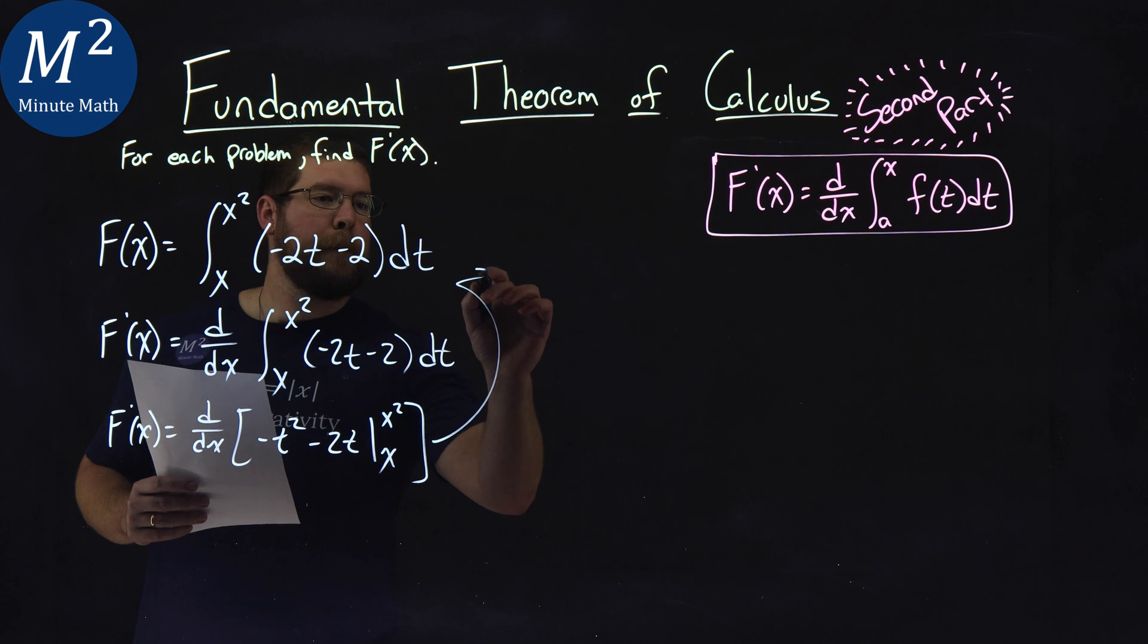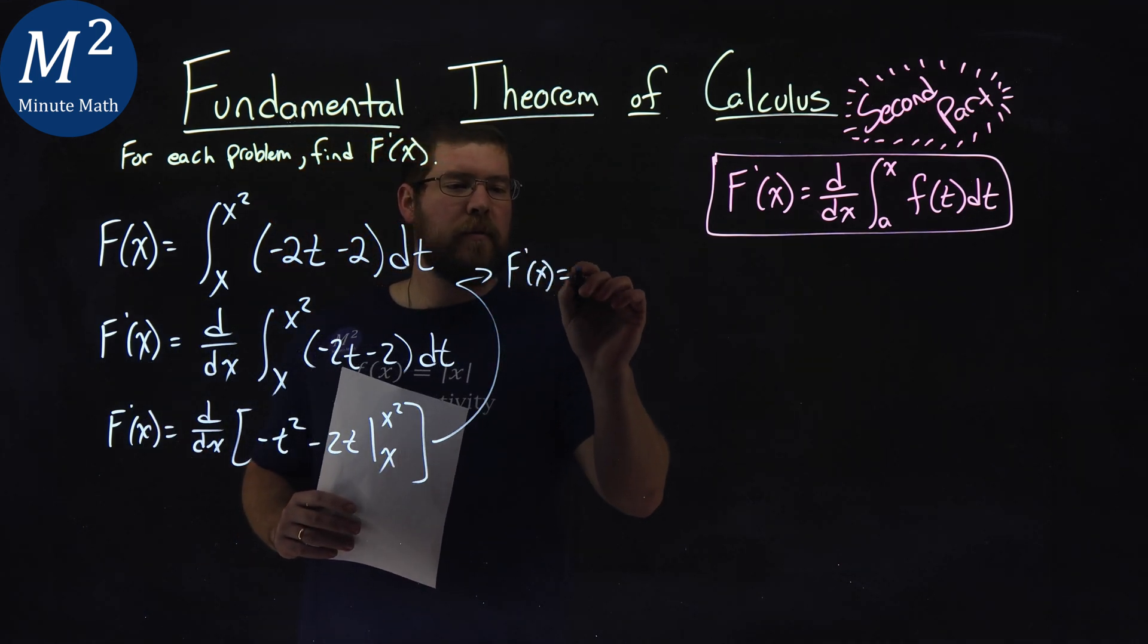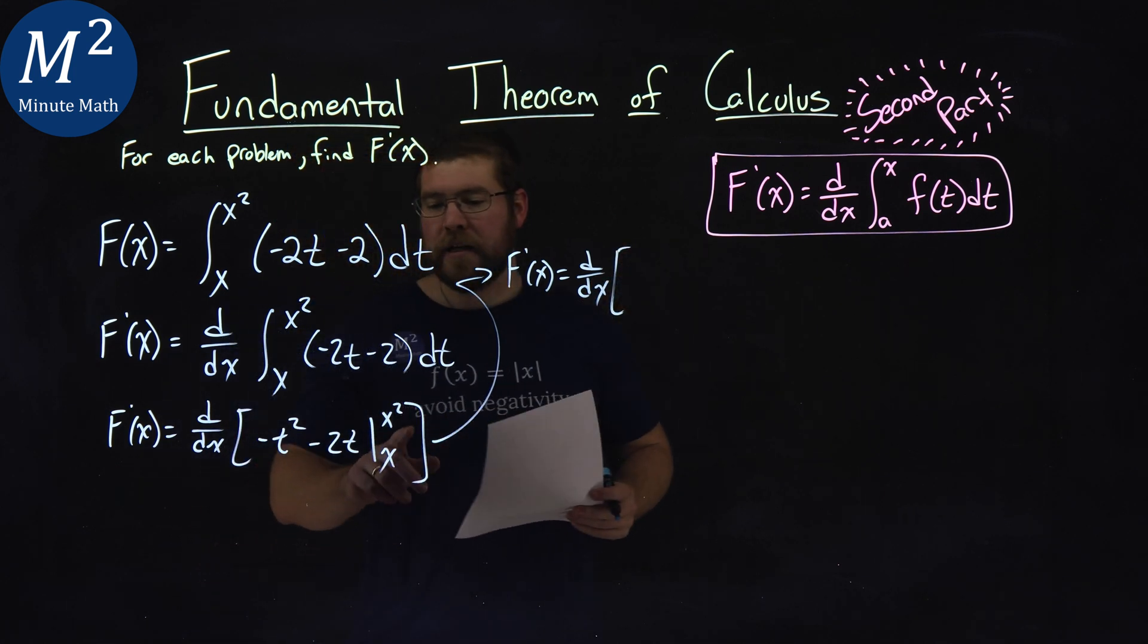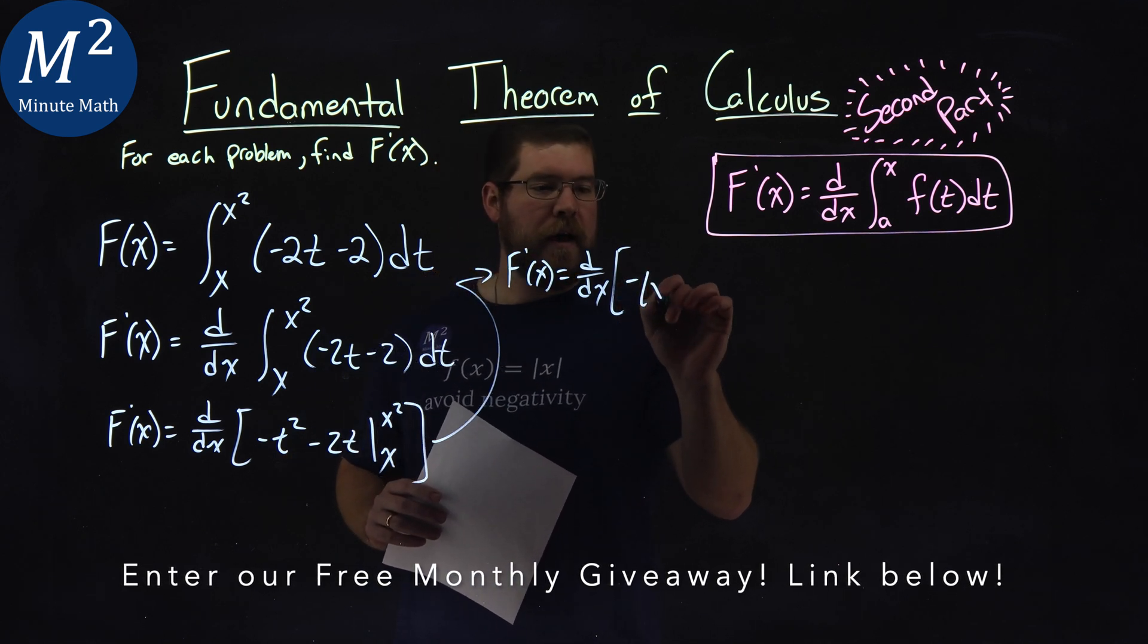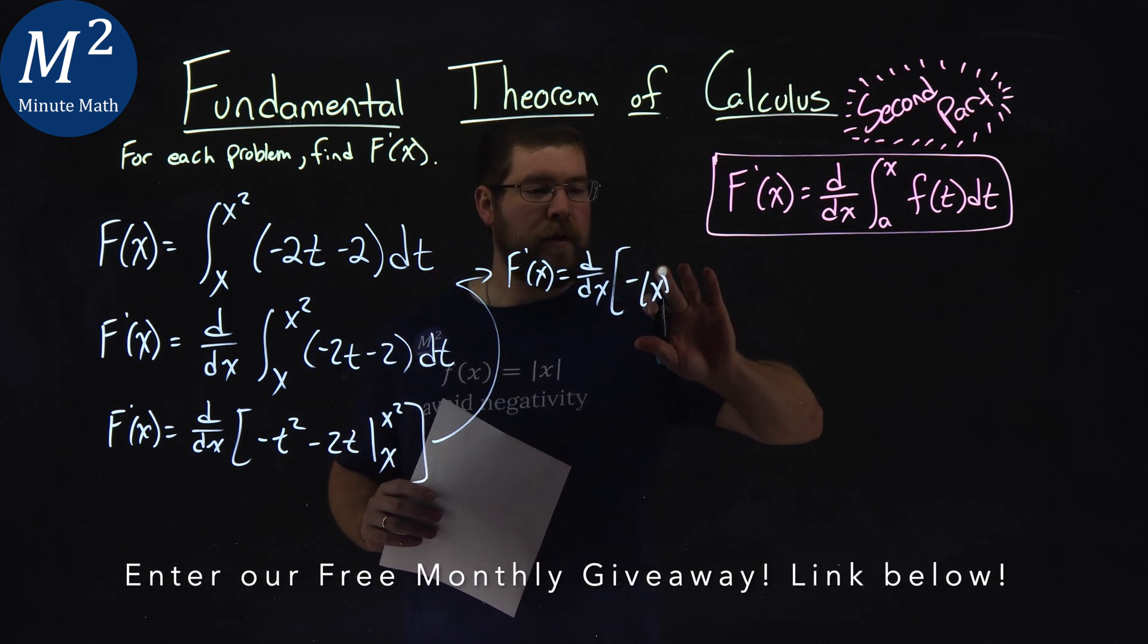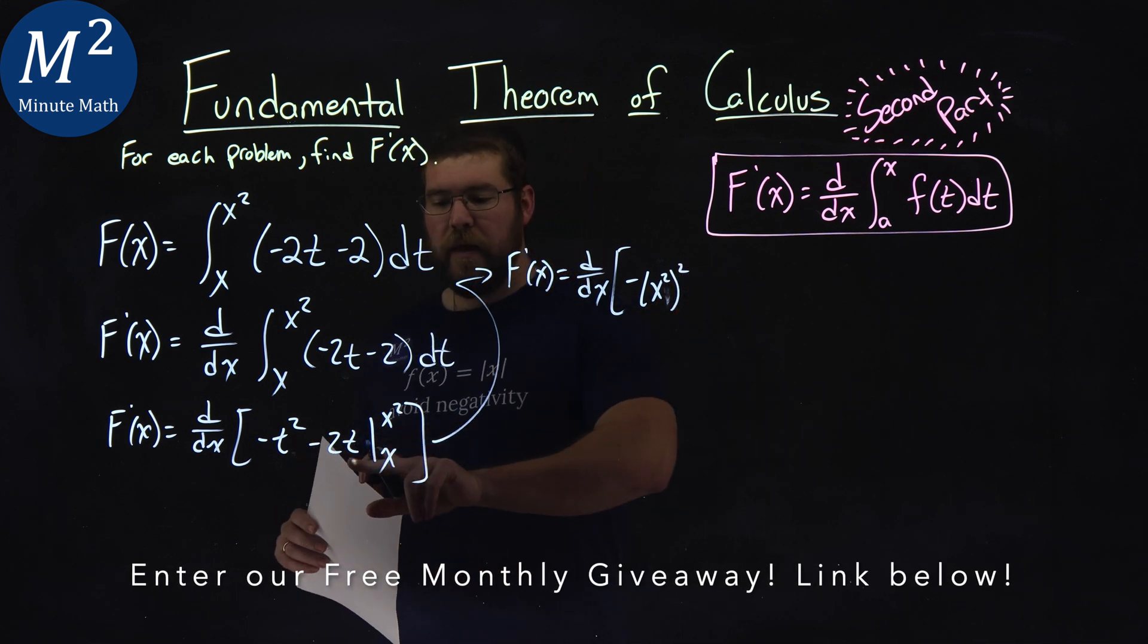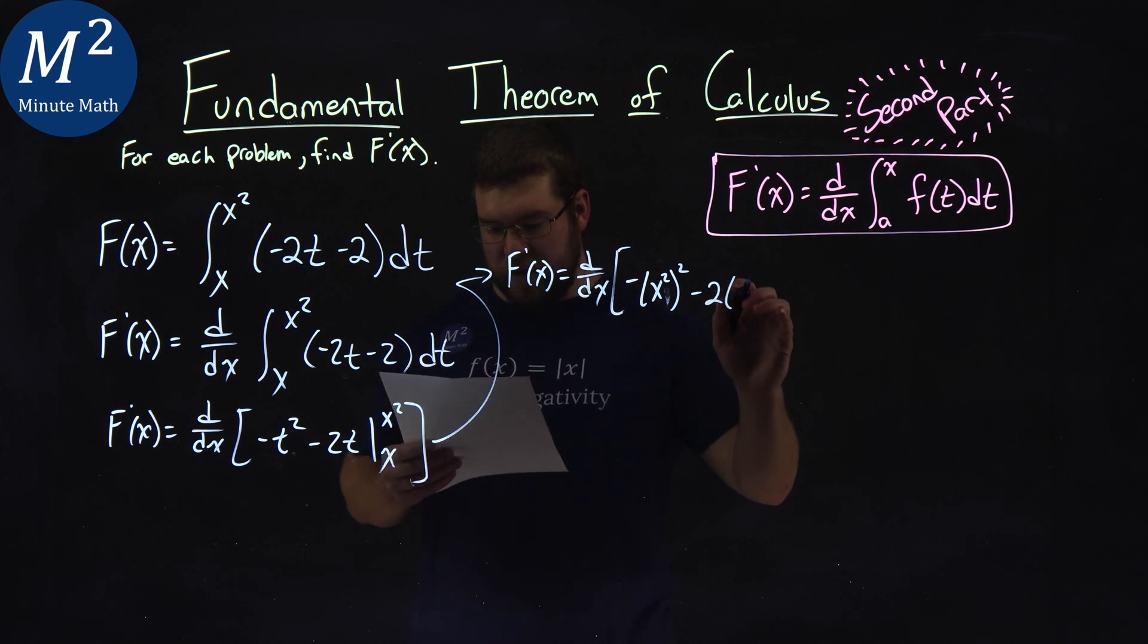f prime of x now is equal to d/dx of, we'll first plug in x squared in for t here. So we have negative x squared, let's see, x squared squared, and then we plug in x squared in for that t, minus 2 times x squared.